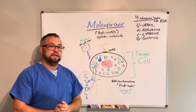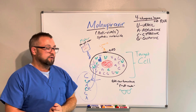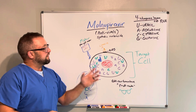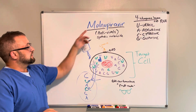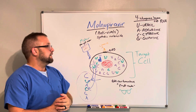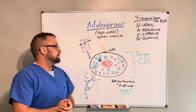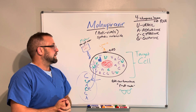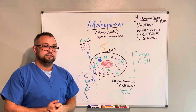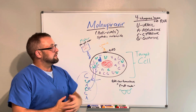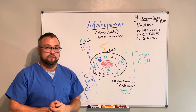In that way, molnupiravir seems to be having more success than remdesivir, though we'll still have to wait to see the FDA's ruling. As a side note, this drug's name actually came from Mjolnir, Thor's hammer in Norse mythology — just like Thor's hammer would strike down his enemies, they hoped this drug would strike down viruses. At the time of development, they thought it would be for influenza, but it turns out it worked better for coronavirus.